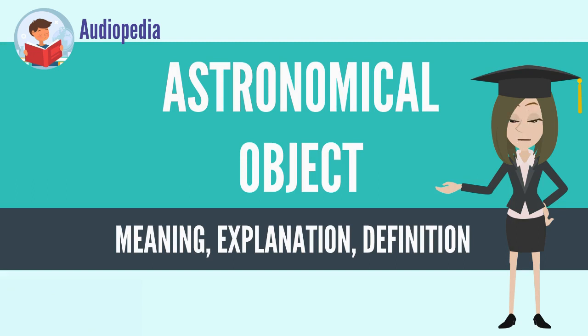the terms object and body are often used interchangeably. However, an astronomical body or celestial body is a single, tightly bound, contiguous entity,